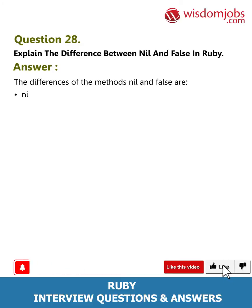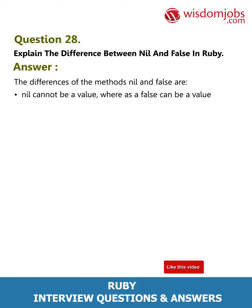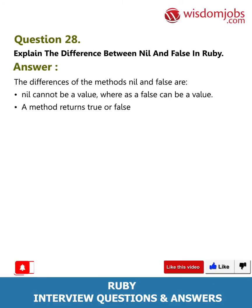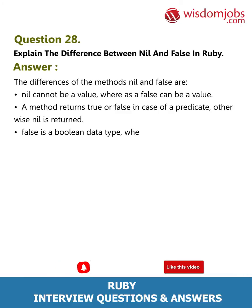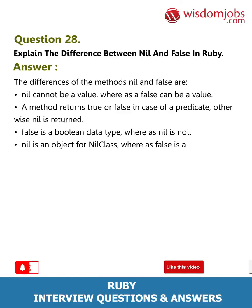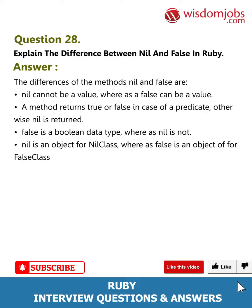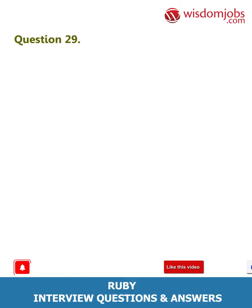Question 28: Explain the difference between nil and false in Ruby. Answer: nil cannot be a value whereas false can be a value. A method returns true or false in the case of a predicate; otherwise nil is returned. False is a boolean data type whereas nil is not. nil is an object of NilClass whereas false is an object of FalseClass.